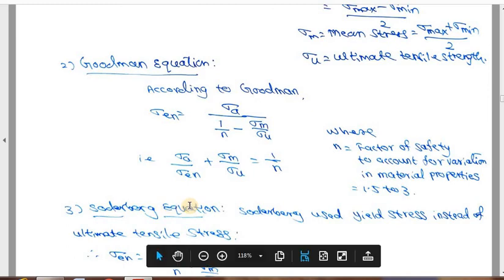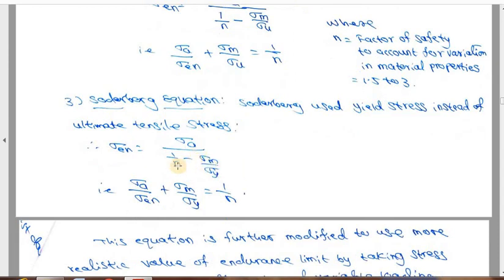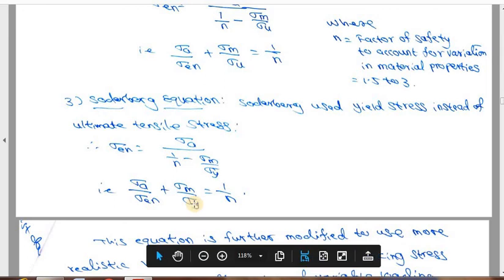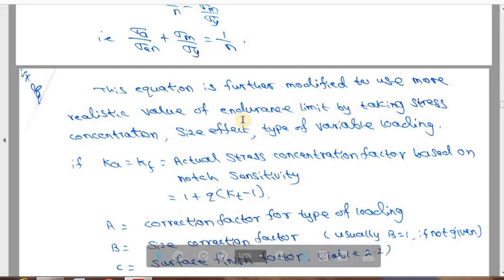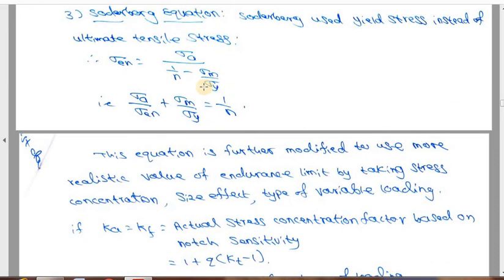In the case of the Soderberg equation, instead of sigma_u we use sigma_y (yield stress). The difference is only in that straight-line relation — the same equation with sigma_u replaced by sigma_y. These equations — Goodman and Soderberg — are called the simple equations.